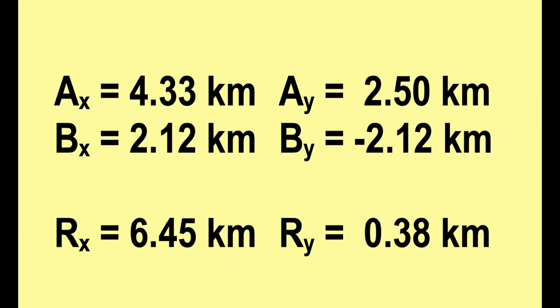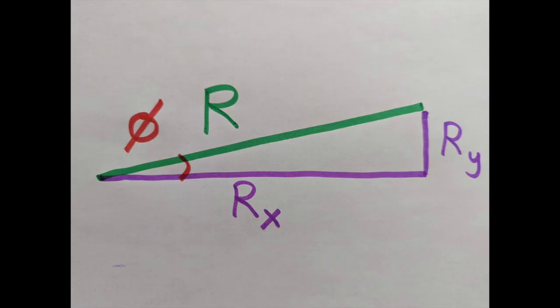Okay, we finally have R sub X and R sub Y. The first two steps of the problem are done. Now we just have to put those back together. Now some problems might simply ask for the components and that would be the answer. But most often, they want to know the magnitude and the direction of the final vector. In other words, they want you to answer the question in the same language in which it was asked. So we know the two sides, RX and RY, and we want the hypotenuse R and the angle phi. That's our new goal.